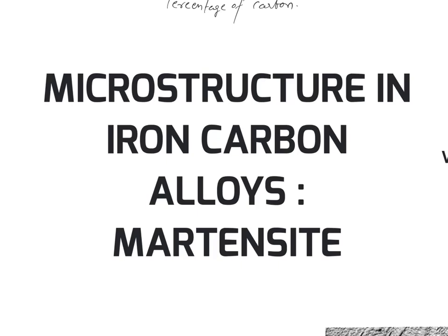Martensite is formed after rapidly cooling the austenite from a temperature above 727 degrees Celsius for an iron-carbon alloy, to a temperature which is nearly the same as the ambient temperature. The structure of martensite is body-centered tetragonal. This particular structure is formed after a diffusionless process — since the cooling was so rapid, diffusion didn't happen at all. That's how we get martensite, which is a metastable product.